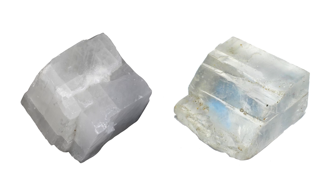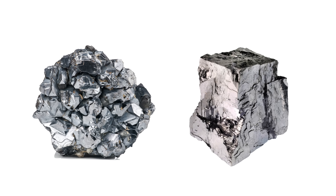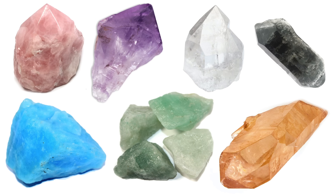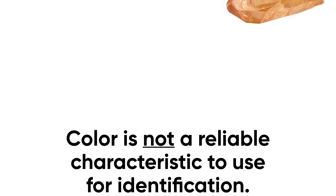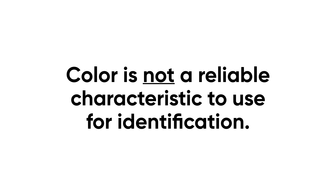To drive this home, take a look at these two samples. They also look very similar in a milky white translucent color — the one on the left is calcite and the one on the right is halite. Here are two more minerals that both have a very metallic silver looking color: the one on the left is magnetite and on the right is galena. And in fact, color poses additional challenges — all of these mineral samples are actually quartz, which exists in multiple colors.